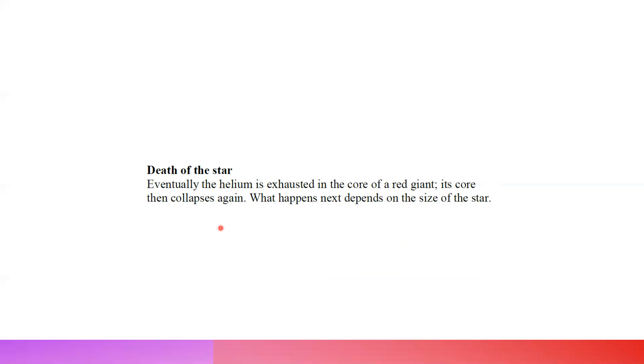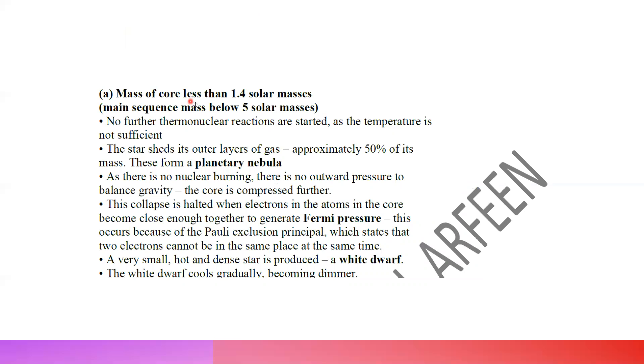The fate of the star depends on its size. Eventually helium is exhausted and the core of the red giant collapses. What happens next depends on the size of the star. If the mass of the core is less than 1.5 solar masses, or the total main sequence mass is below 5 solar masses, then as the star turns into a red giant and helium fusion starts, it releases energy. A very small, hot, dense star is produced—a white dwarf—which cools gradually and becomes dimmer.